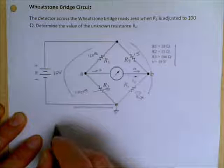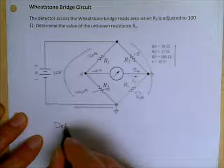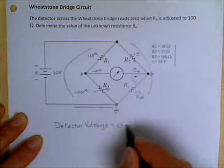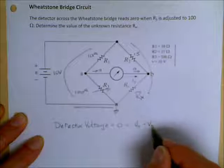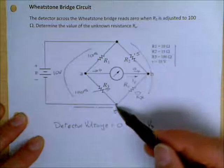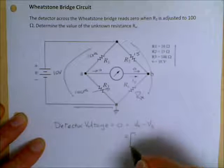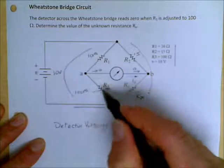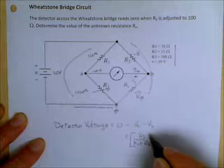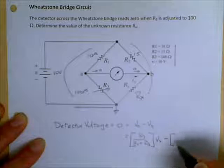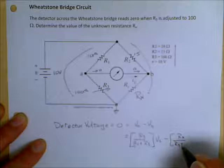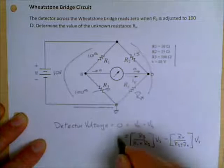The voltage across the detector is equal to zero, which equals VA minus VB. VA is the voltage at A with respect to the reference, and VB is the voltage at B with respect to the reference. The voltage divider on the A side gives us R3 divided by R1 plus R3, all multiplied by Vs. On the other side we have Rx divided by R2 plus Rx, all multiplied by Vs. That of course equals zero.